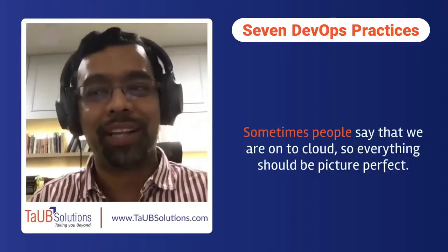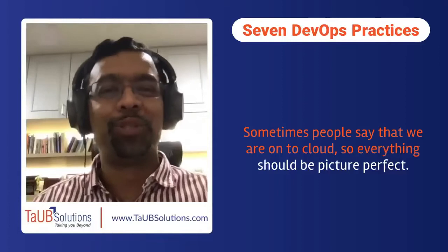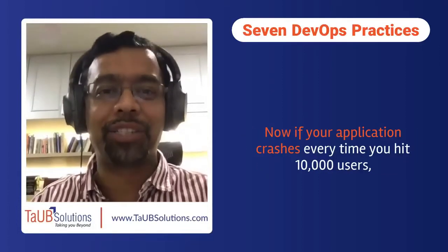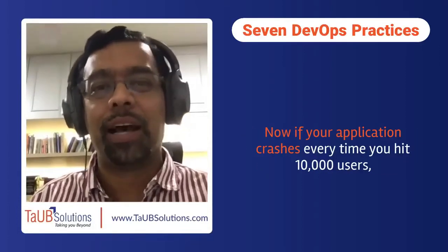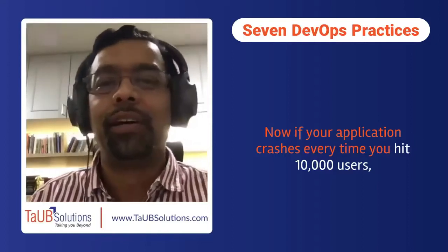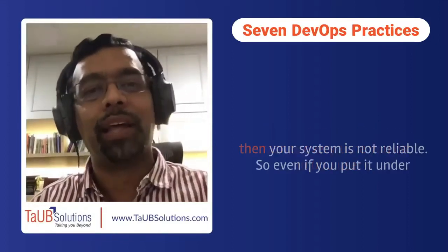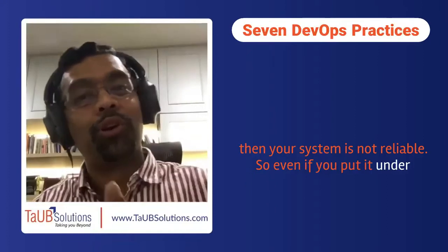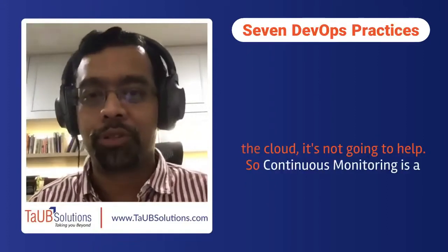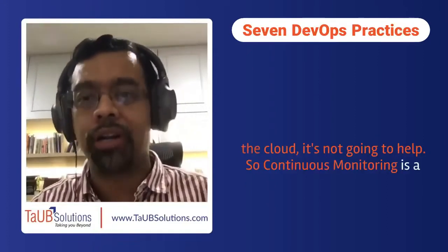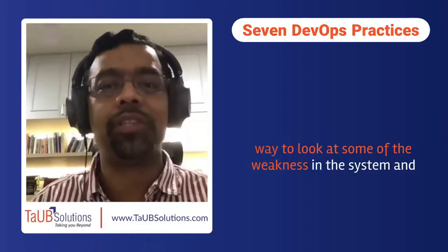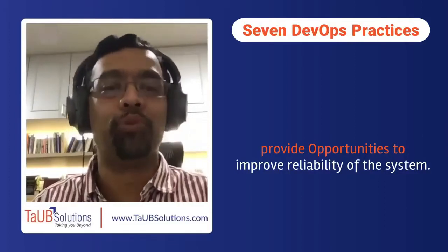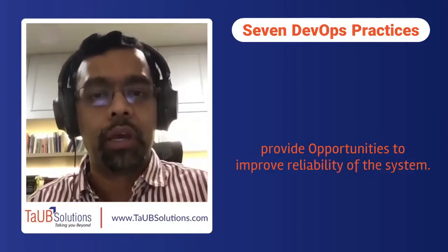Sometimes people say that being on the cloud means everything should be perfect. But if your application crashes every time you hit 10,000 users, your system is not reliable — and simply putting it on the cloud won't help. Continuous monitoring is a way to identify weaknesses in the system and provide opportunities to improve its reliability.